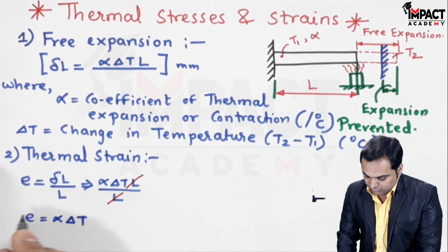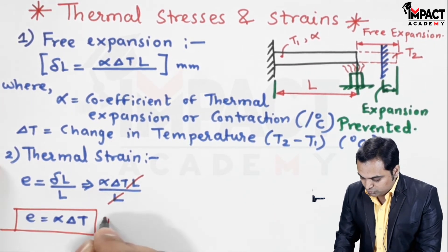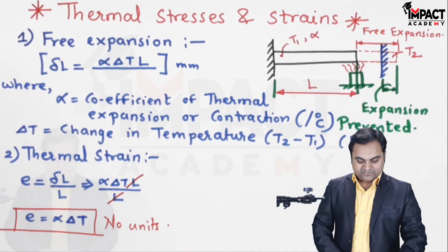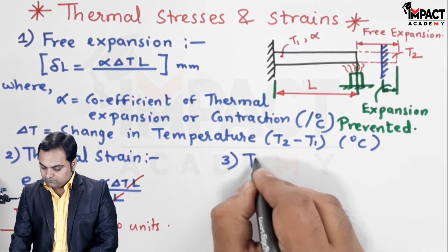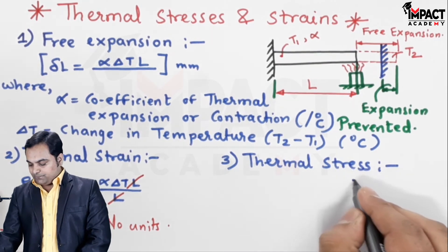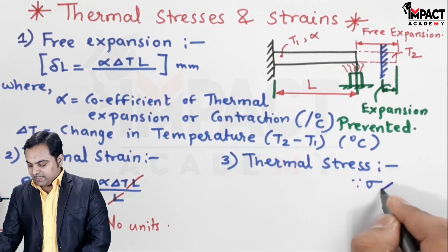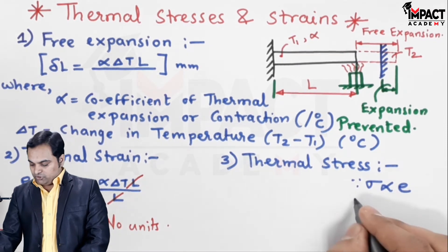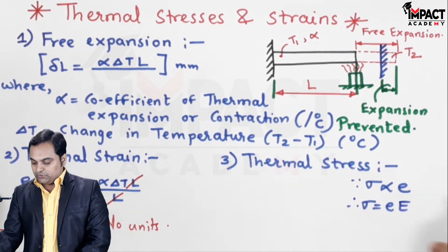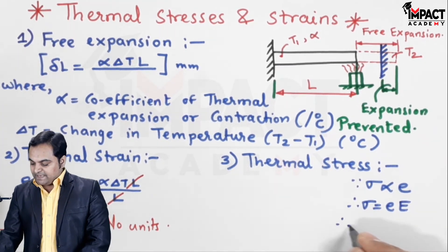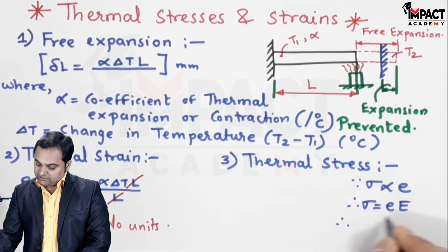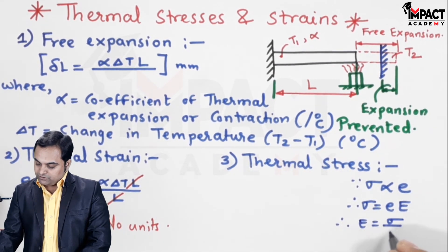And it has no units. Then similarly thermal stress. Now since from Hooke's law stress is directly proportional to strain within the elastic limit, therefore stress is equal to strain into Young's modulus, which is the constant of proportionality. And therefore Young's modulus is stress upon strain.